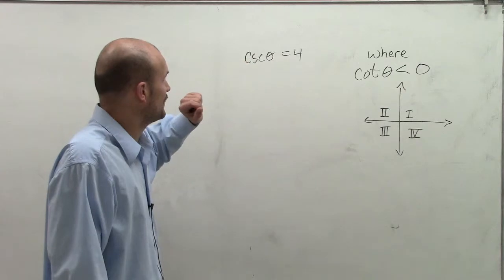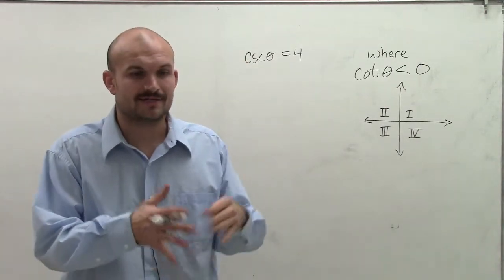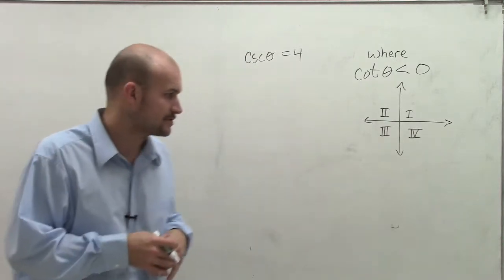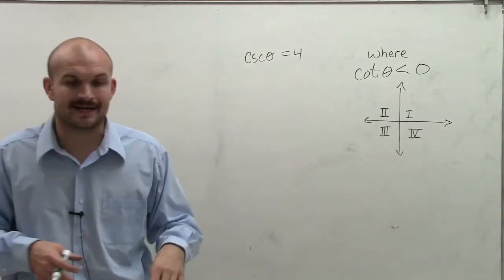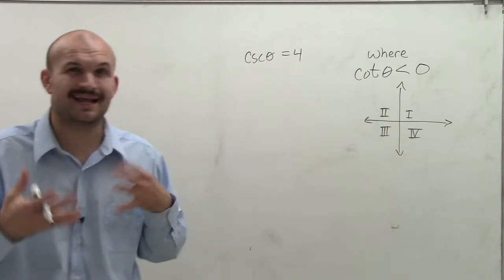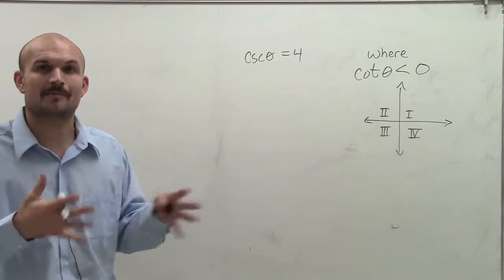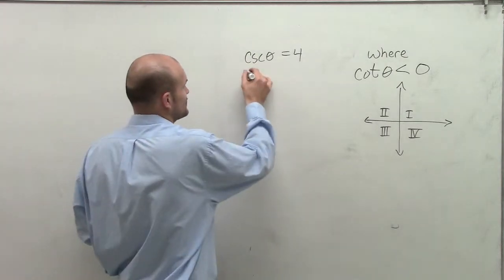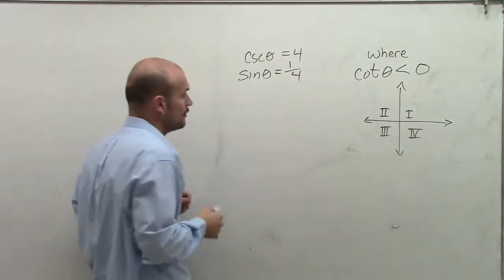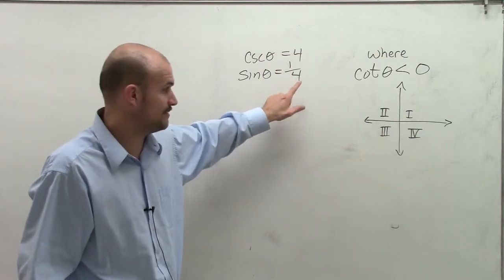The first thing I need to do is work with cosecant of theta equals 4. I need to create a triangle to evaluate theta and find my six trigonometric functions. I know that cosecant is the reciprocal of sine, and I like to put things back in terms of sine. So if cosecant of theta equals 4, that means sine of theta equals 1 over 4, meaning the opposite side is 1 and the hypotenuse is 4.